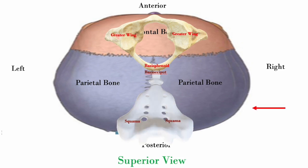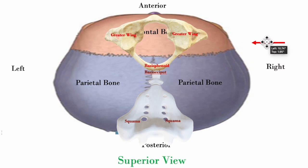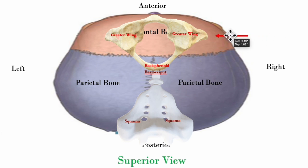We are now going to talk about a lateral strain pattern. This is not physiologic — the basi-sphenoid and the basi-occiput articulation is no longer intact. How this occurs is someone gets hit right on the greater wing — a side blow to the head, right on the greater wing of the sphenoid.